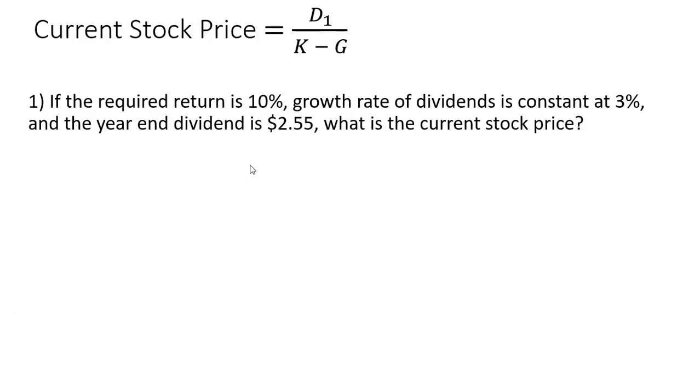Let's do some problems. If the required return is 10%, the growth rate of dividends is constant at 3%, and the year-end dividend is $2.55, what is the current stock price? So using the formula, the dividend here is $2.55. The required return is 10%, but we're going to put that in as a decimal. And the growth rate in dividends is 3%, and that also goes in the formula as a decimal. Doing the math here, the current stock price is $36.43.